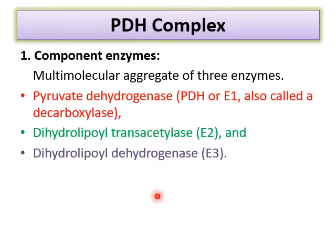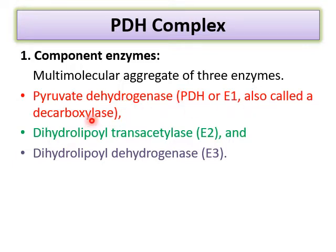The pyruvate dehydrogenase complex (PDH complex) is a multi-enzyme complex comprising component enzymes and coenzymes. There are three component enzymes designated E1, E2, and E3. E1 is called pyruvate dehydrogenase (PDH) or decarboxylase; E2 is called dihydrolipoyl transacetylase; and E3 is called dihydrolipoyl dehydrogenase. The letter E stands for enzyme.